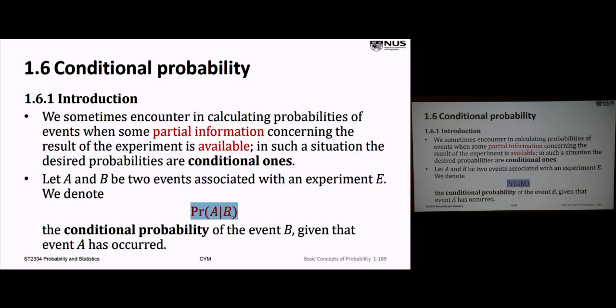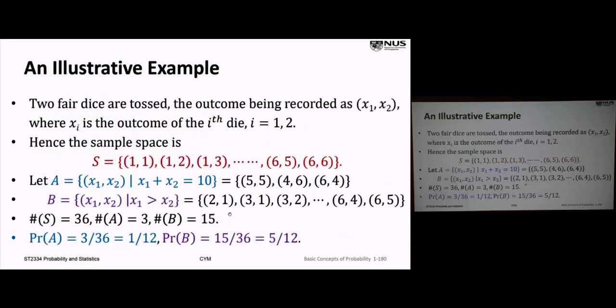Example: roll two fair dice, recording outcome X1 (score of first die) and X2 (score of second die). X1 and X2 can each be 1, 2, 3, 4, 5, or 6. The sample space has 36 elements — from (1,1) all the way to (6,6), giving 36 possible outcomes. We introduce set A as all (X1, X2) pairs where X1 plus X2 equals 10.